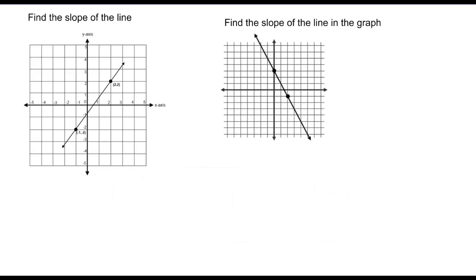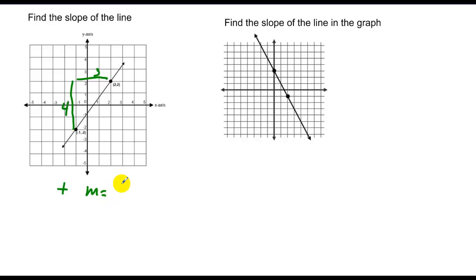If I want to define the slope of a line, I can either use a numerical calculation or just count how far I go up and how far I go over. We know this is a positive slope because it rises as I go from left to right. If I go up one, two, three, four — my rise is equal to four. My run is equal to three. So this has a slope of four thirds.